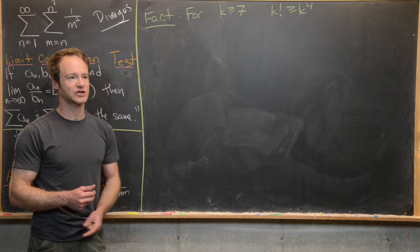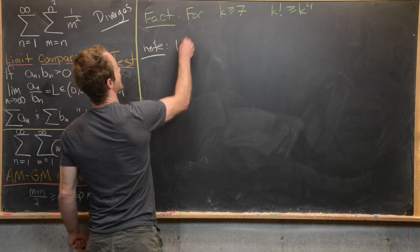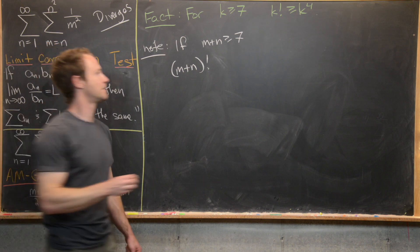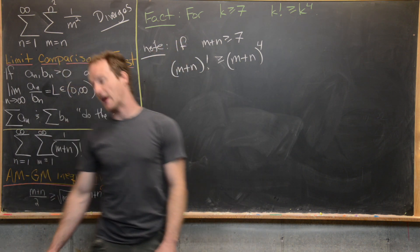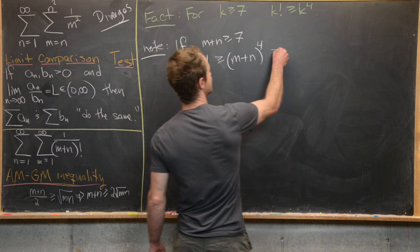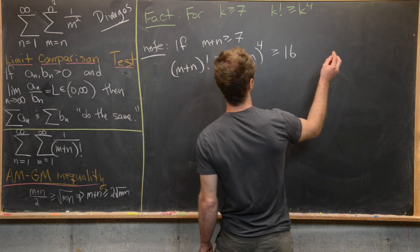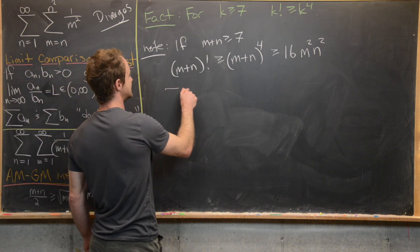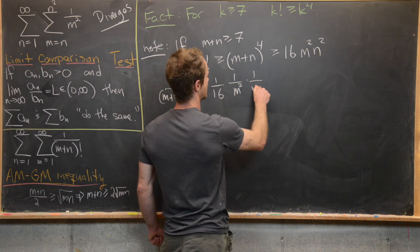So now, if m plus n is bigger than or equal to 7, we have m plus n factorial is going to be bigger than or equal to m plus n to the fourth power. Then combining this with the AM-GM inequality — that is, raising both sides of the AM-GM inequality to the fourth power — we see that this is bigger than or equal to 2 to the fourth, which is 16, times the square root of mn to the fourth, which is m squared n squared. So that tells us that one over m plus n factorial is going to be less than or equal to one sixteenth times one over m squared times one over n squared.